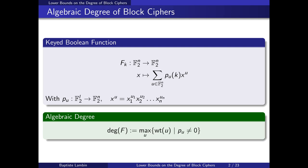The main focus of this work is the algebraic degree of block ciphers. One way to see a block cipher is as a keyed boolean function — a function over F2 to the n, parametrized by key k — and we can represent it with its ANF, its algebraic normal form, which is a polynomial with monomials x to the u, where the coefficients are given by some polynomials p_u over the key. We define the algebraic degree as the maximum over all weights of u such that p_u is non-zero, so essentially it's the highest degree of any monomial x to the u appearing in the ANF of any coordinate.